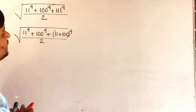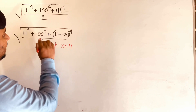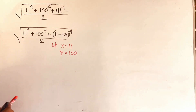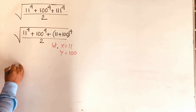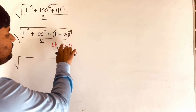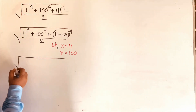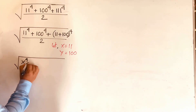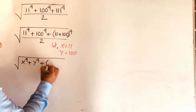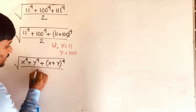So let x equal to 11 and y equal to 100. Then I can see easily it will be square root of x to the power 4 plus y to the power 4 plus (x plus y) to the power 4, over 2.